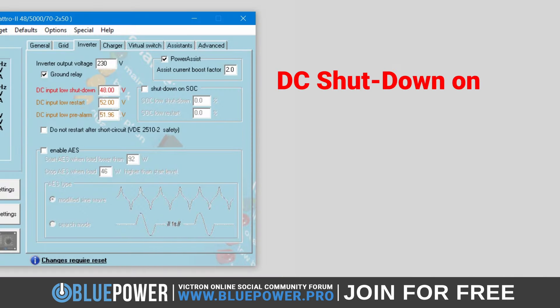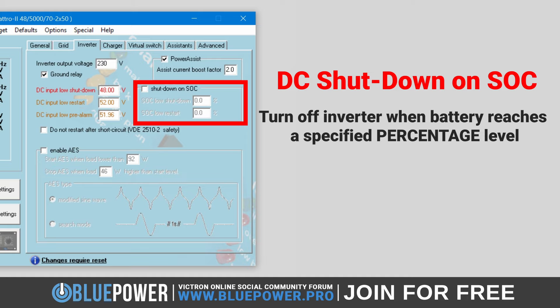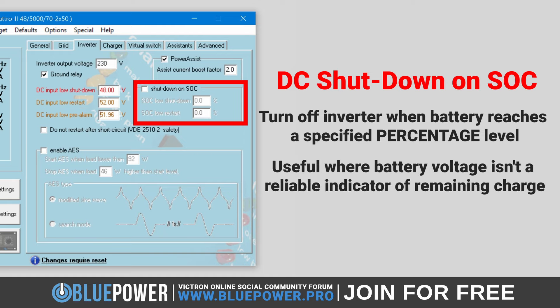Very similar to the DC Input Low Shutdown voltage settings, the Low SoC Shutdown feature is designed to turn off the inverter when the battery's state of charge falls to a predetermined level. This is particularly useful in scenarios where the battery voltage isn't a reliable indicator of remaining charge, which can be the case with certain battery chemistries or under specific load conditions — one of these being lithium iron phosphate, which tends to have a flat and sometimes erratic voltage discharge curve in relation to the battery state of charge.